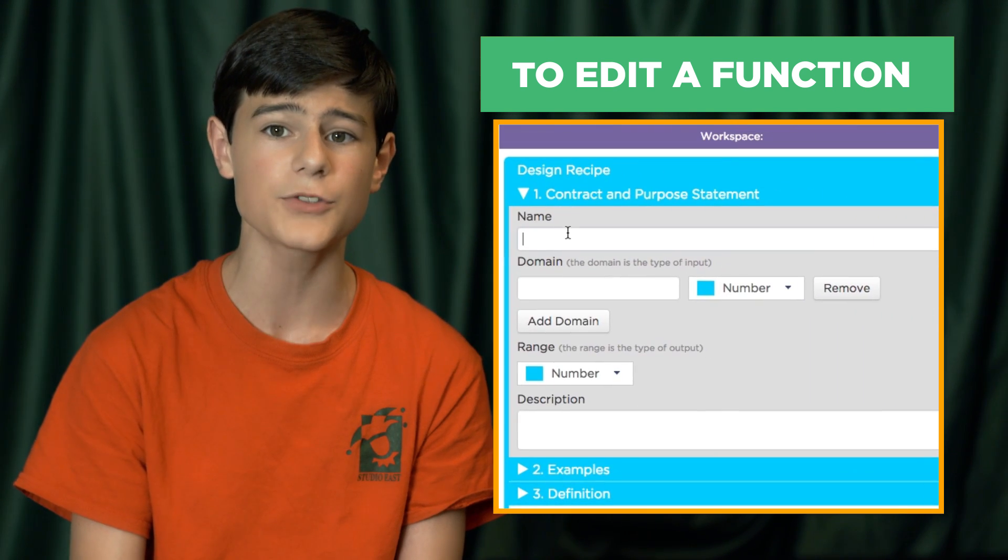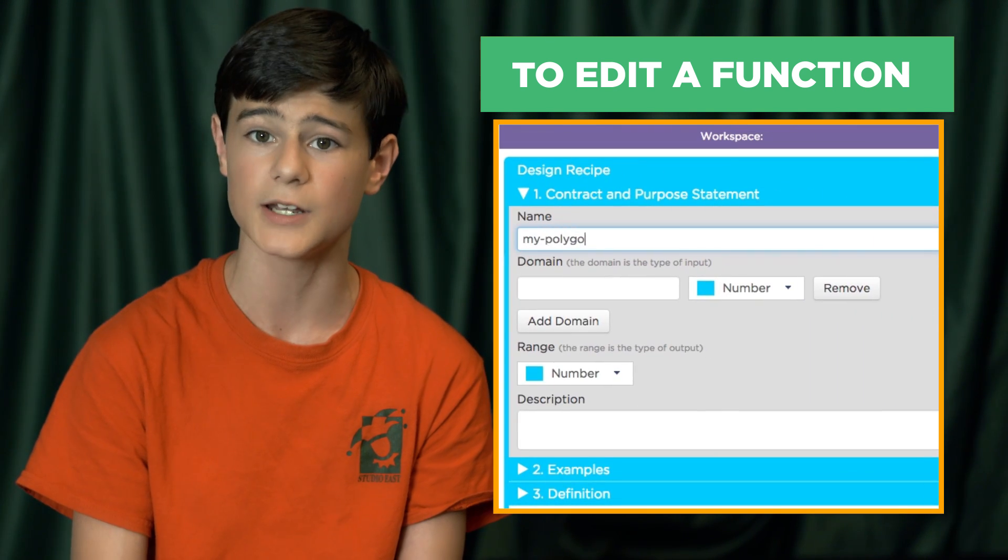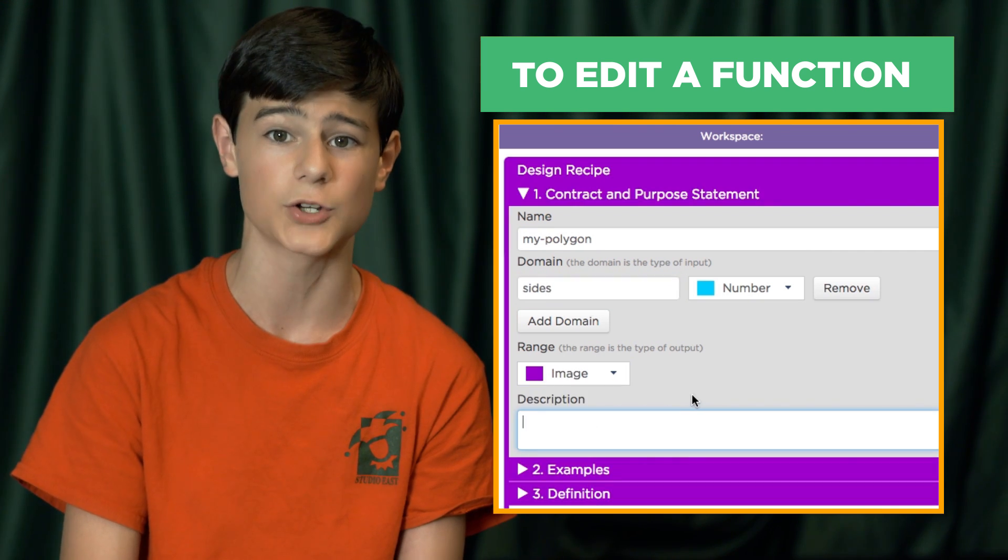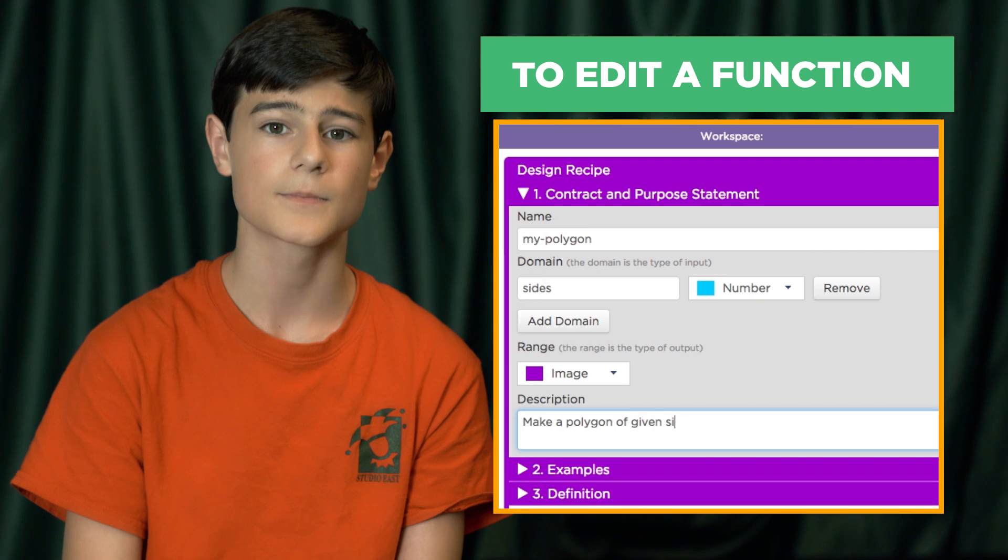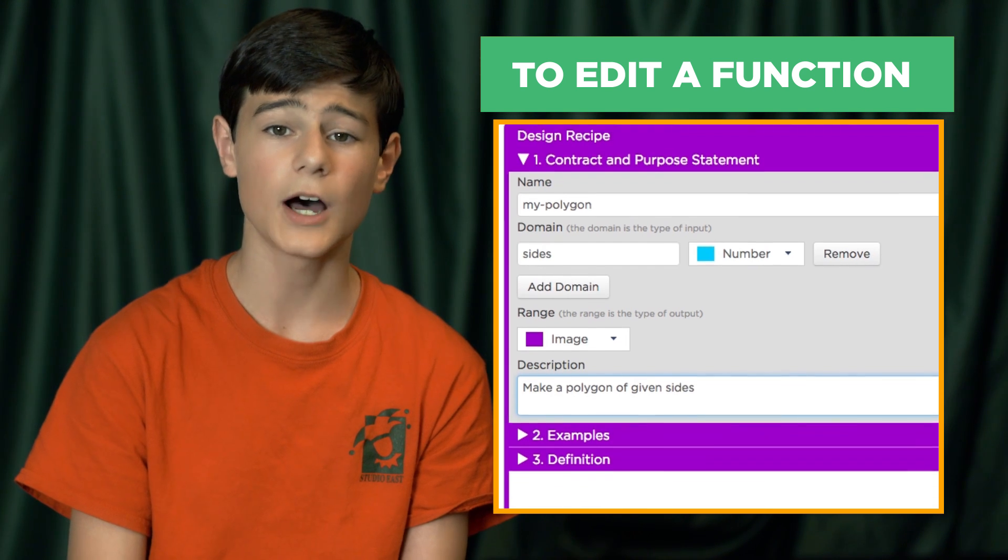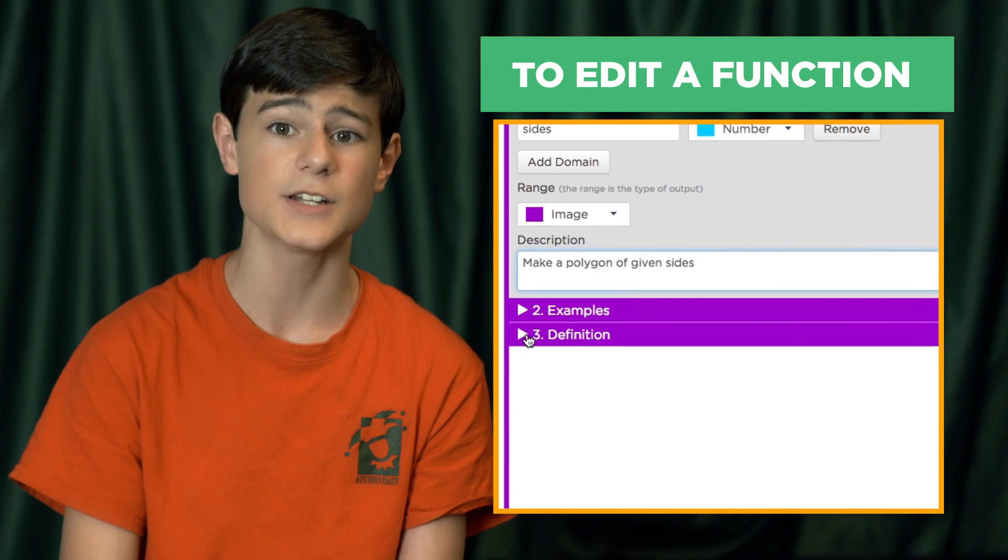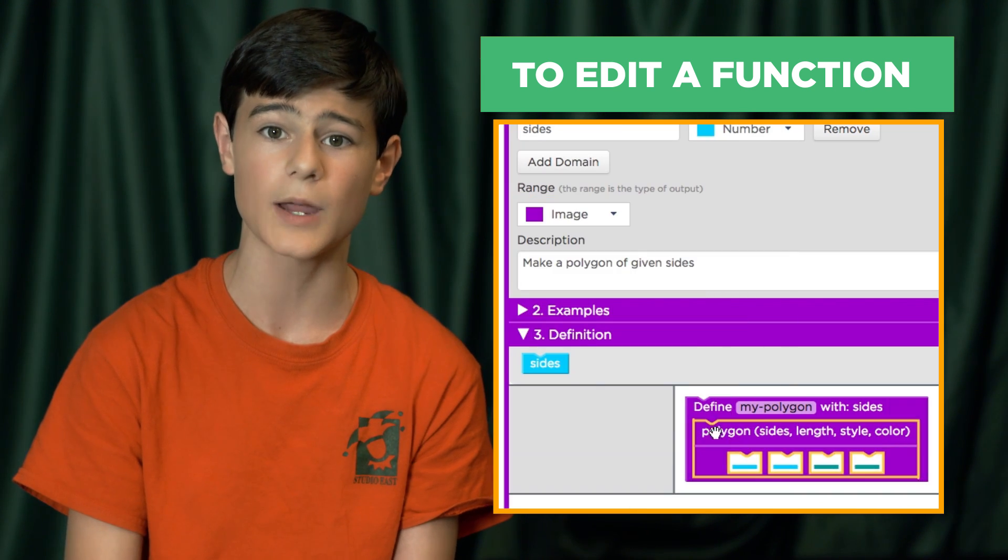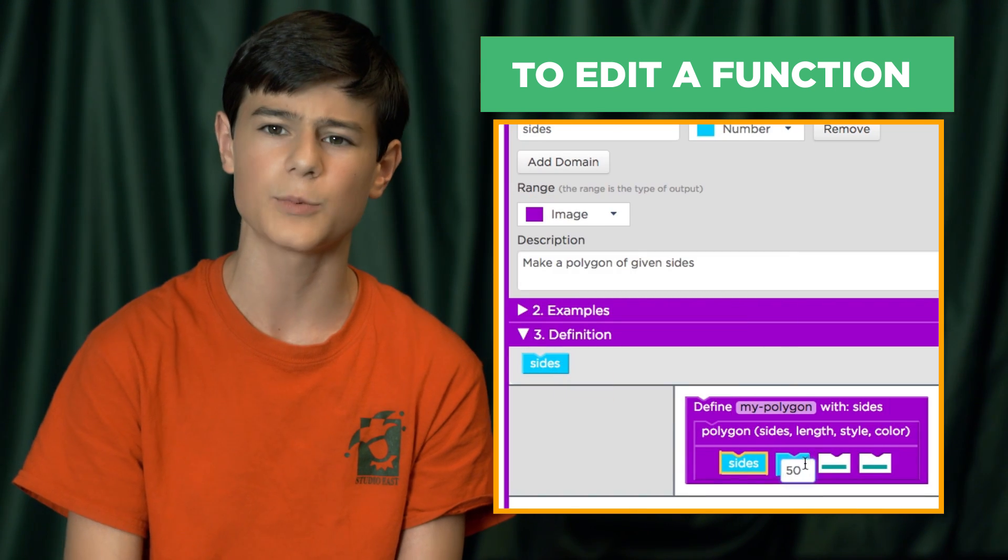From there, you can complete the contract for your new function, including a name, domain, and range. There's also a section for you to write a description of what your function should do. Underneath the function contract is an area for you to build your function definition. Make sure to use the parameter blocks that were generated when you filled out the domain.